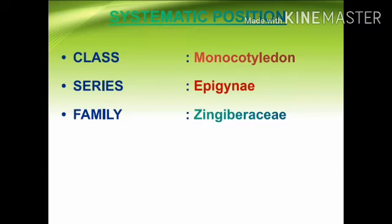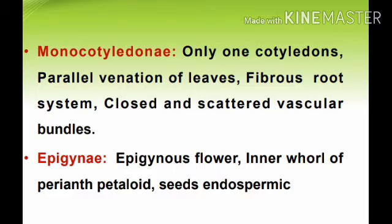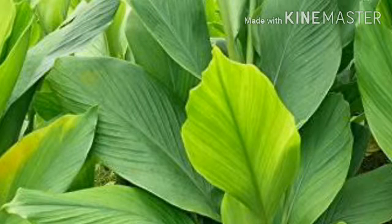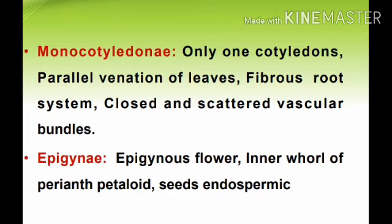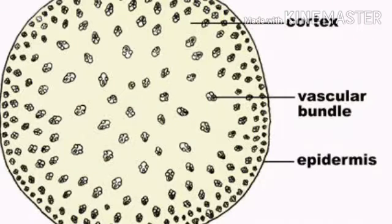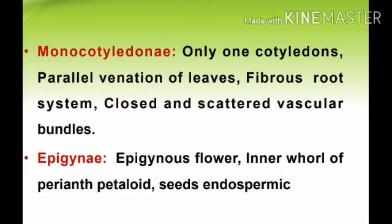The characters of Monocotyledon include: only one cotyledon, parallel venation of leaves, fibrous root system, and closed and scattered vascular bundles. Closed means the vascular bundles are closed to secondary growth because of the absence of cambial rings, and the vascular bundles are scattered in monocotyledonous plants.